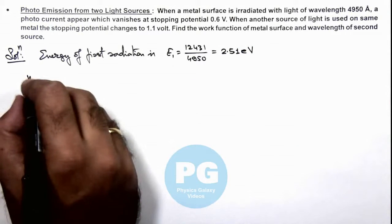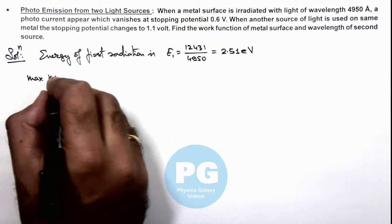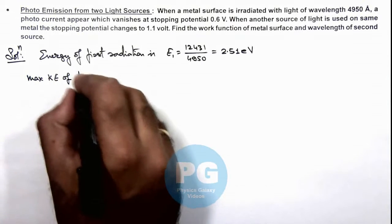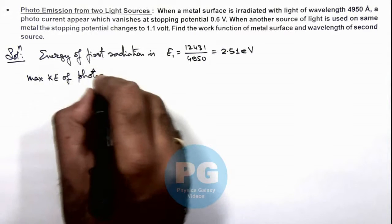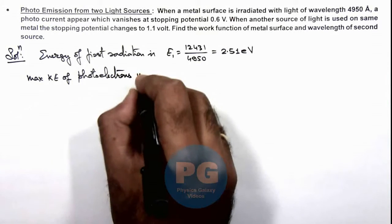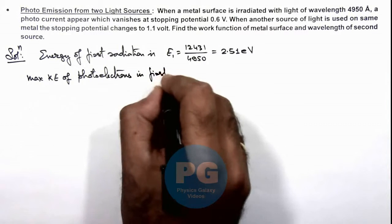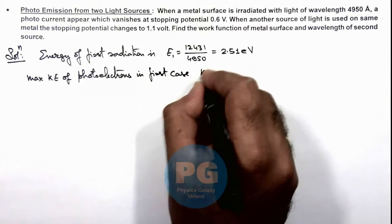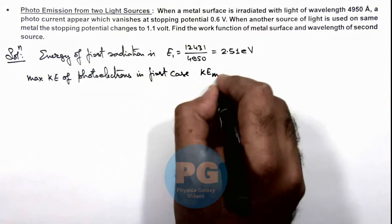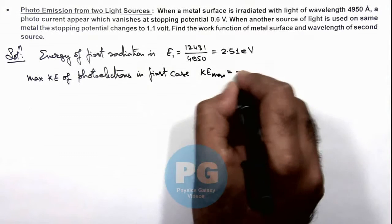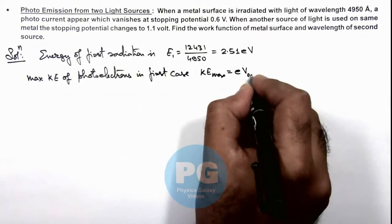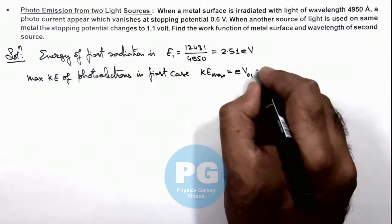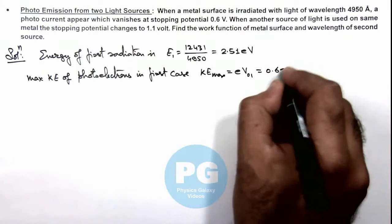Now if we calculate the maximum kinetic energy of photoelectrons in the first case, we know it is given as eV₀. Here we can write V₀₁, the first stopping potential, so this is 0.6 electron volts.